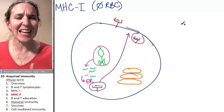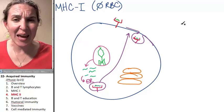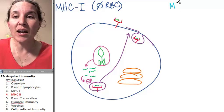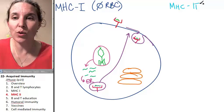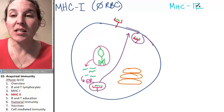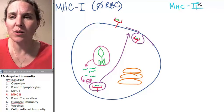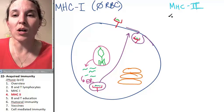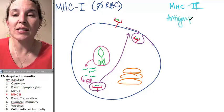MHC II is exactly the same idea, but not everybody has it. MHC II is only found on cells that are involved in antigen presentation — the antigen presenters.